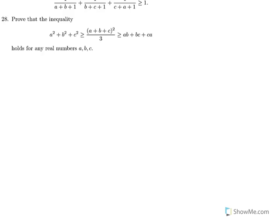Exercise 28. Prove that a squared plus b squared plus c squared is greater than or equal to a plus b plus c perfect square divided by 3, and that is greater than or equal to ab plus bc plus ca, for any real numbers a, b, c.